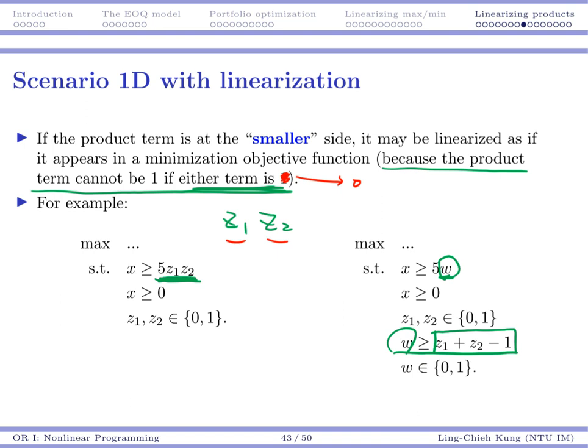So as long as you have a product of two binary variables, it doesn't matter where it locates, you always may find a way to linearize it. Obviously, if you have a product of 3, 4, 10 binary variables, you play the same trick. So I hope it makes sense for you.